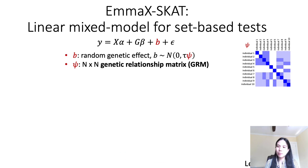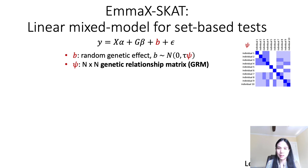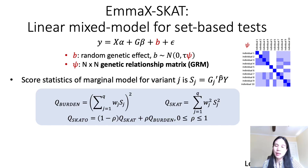MXSCAT is a mixed model method for gene-based tests implemented in the SCAT-R package. The phenotype is regressed on genotypes with a random effect B to account for sample-relatedness. The variance-covariance matrix of B corresponds to the n-by-n genetic relationship matrix, where n is the number of samples in the study. Gene-based test statistics can be constructed based on the score statistics from the marginal model for individual genetic variants in the tested gene or variant set, including the Burden test, SCAT test, and SCAT-O test, which is a hybrid of Burden and SCAT.